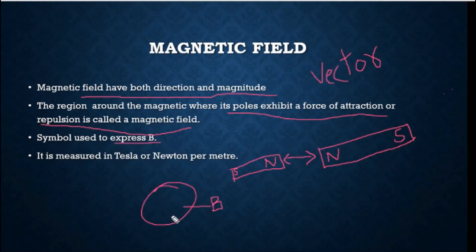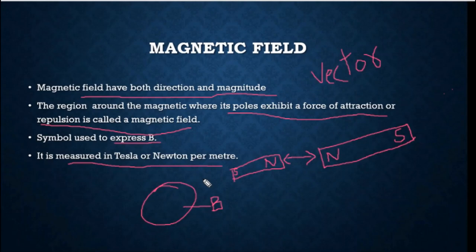If it is a magnetic field and we want to show or express it, then we will show it with B. Now, if we talk about the unit, the unit of magnetic field is Tesla, and it is measured in Newton per meter. You can also use Newton per meter as well as Tesla.